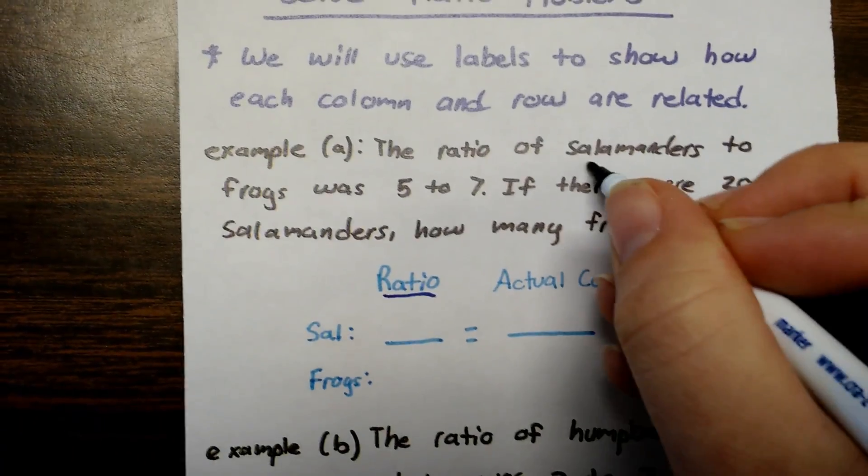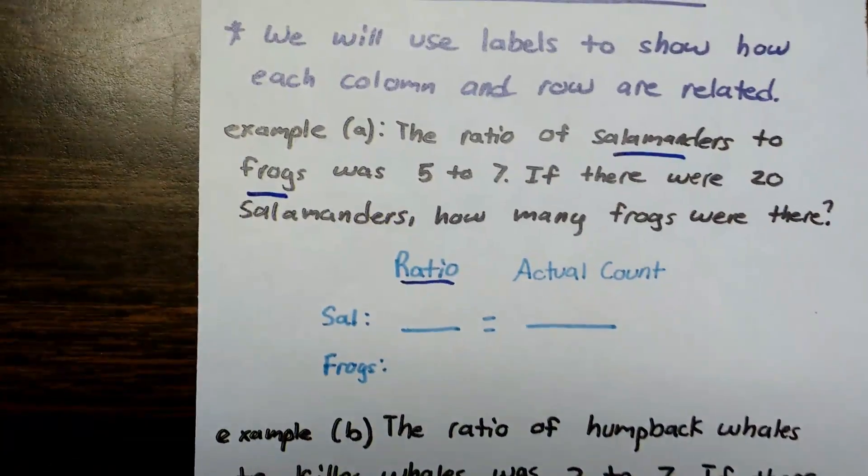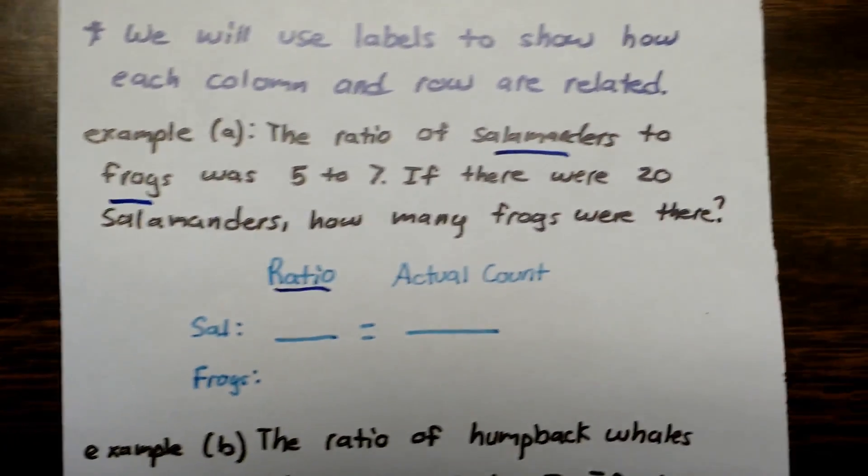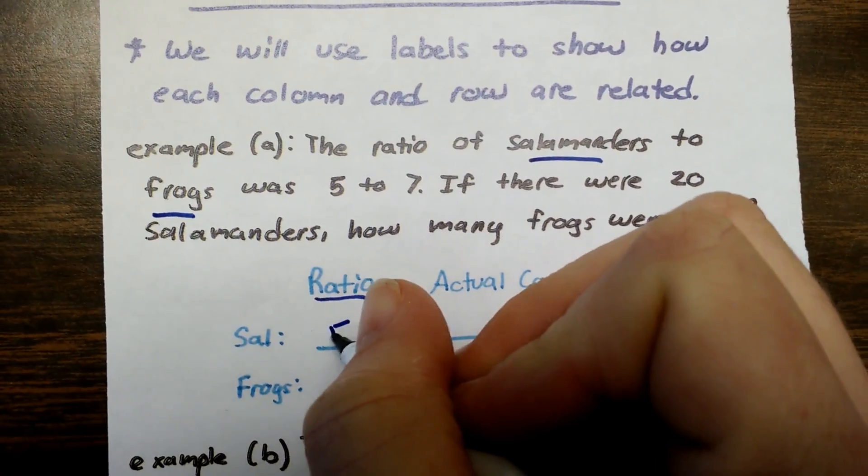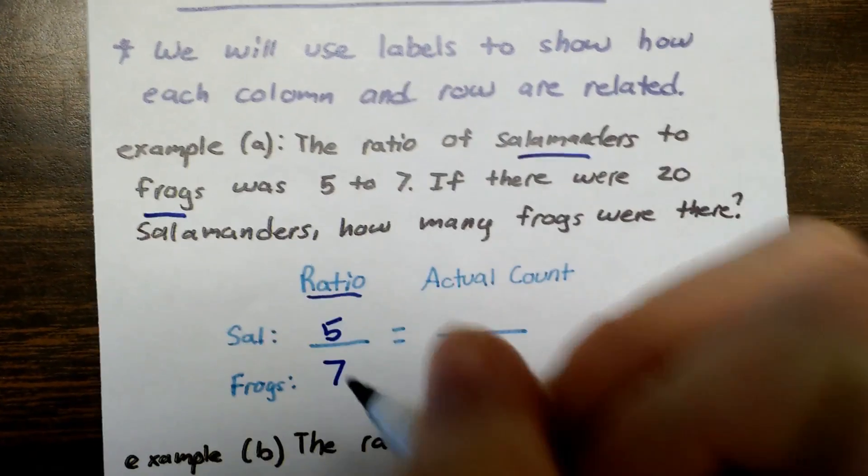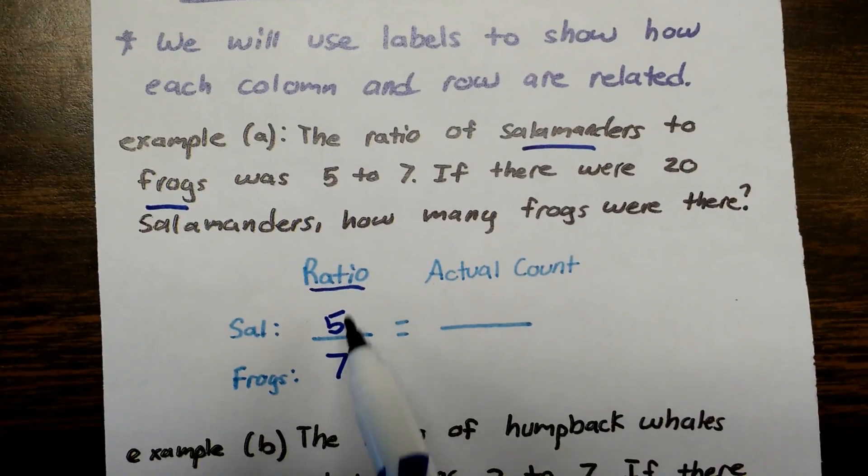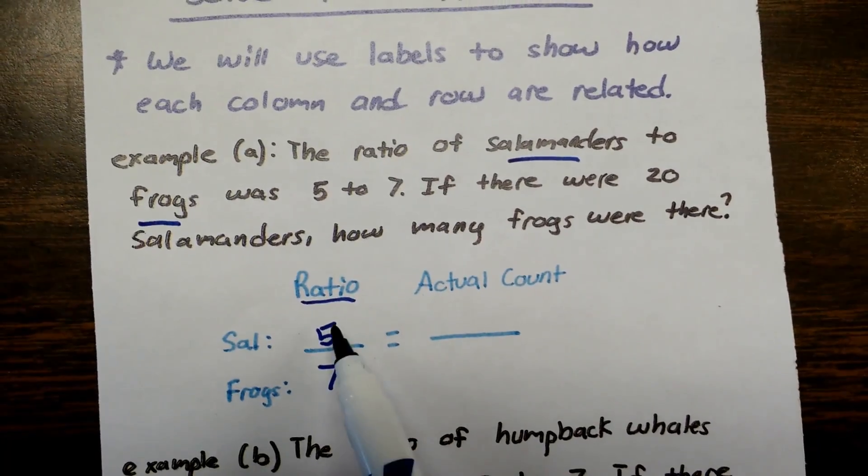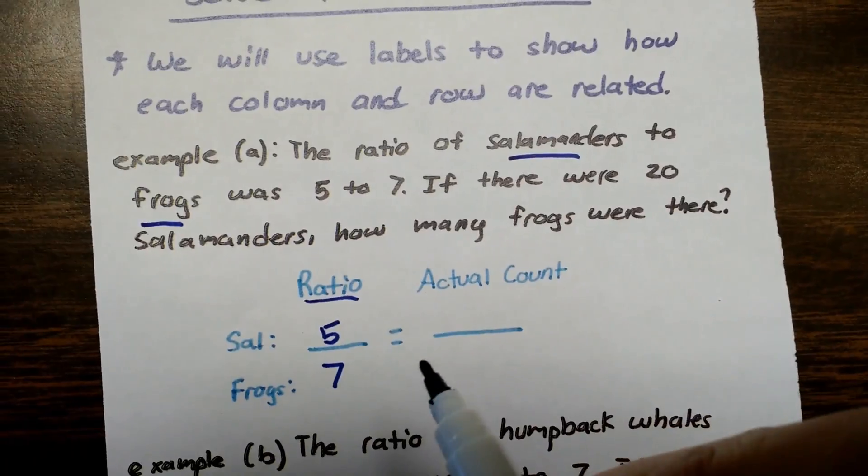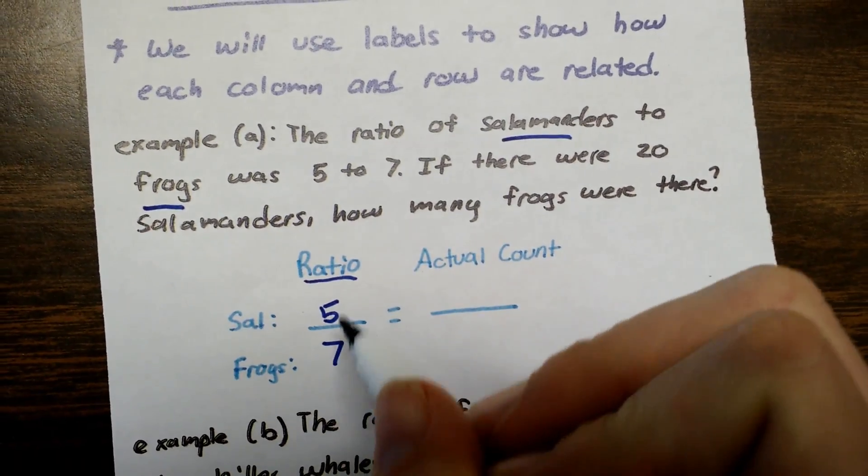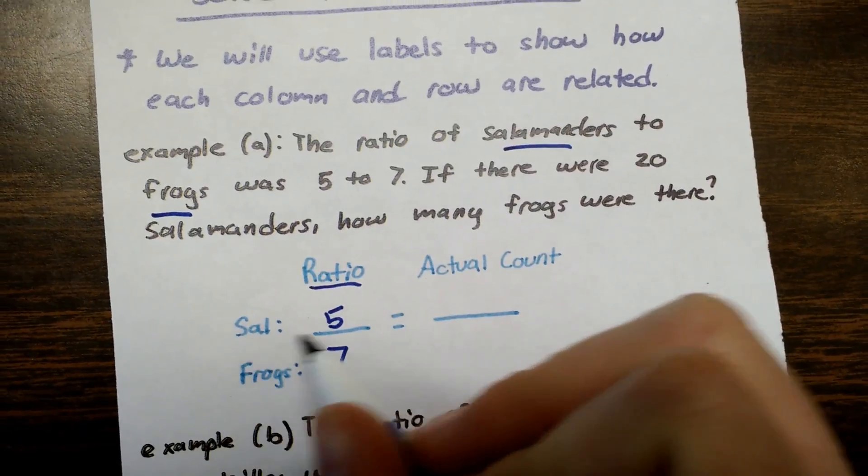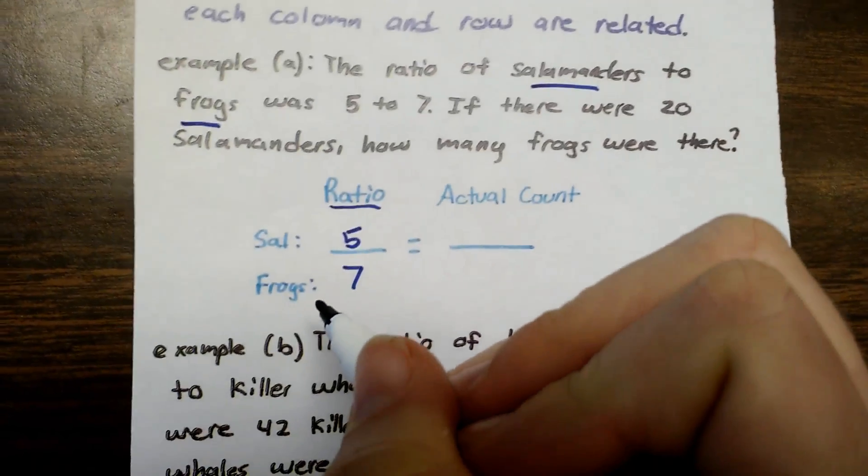So the ratio of salamanders to frogs. Which thing came first? Salamanders. So the salamanders was 5 to the frogs were 7. I just plugged them right into a fraction here as a ratio. Now if I was doing this and I didn't already have this set up I would have written 5 to 7 and then I would have labeled the 5 as salamanders and the 7 as frogs.